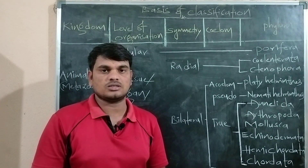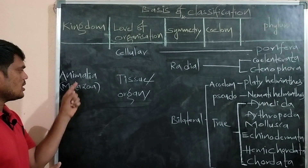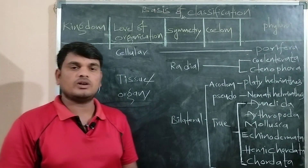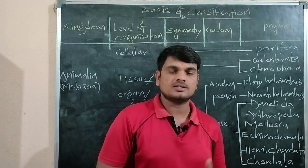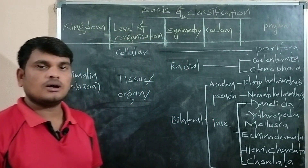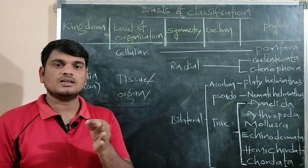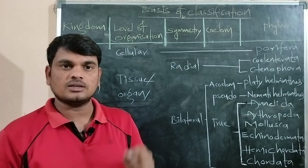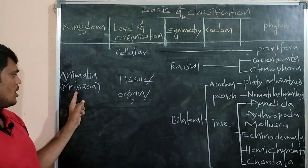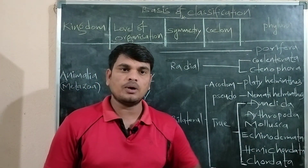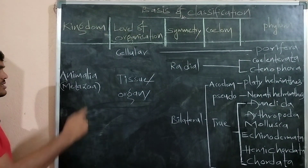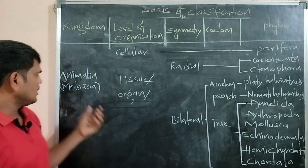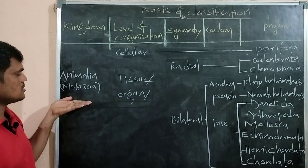Concentrate here on the chart. Kingdom Animalia includes a number of animals. Kingdom Animalia includes two sub-kingdoms: one is Protozoa and the second one is Metazoa. Protozoa includes unicellular organisms — single-celled organisms, body is made up of a single cell. Metazoa includes multicellular animals, body is made up of many cells.